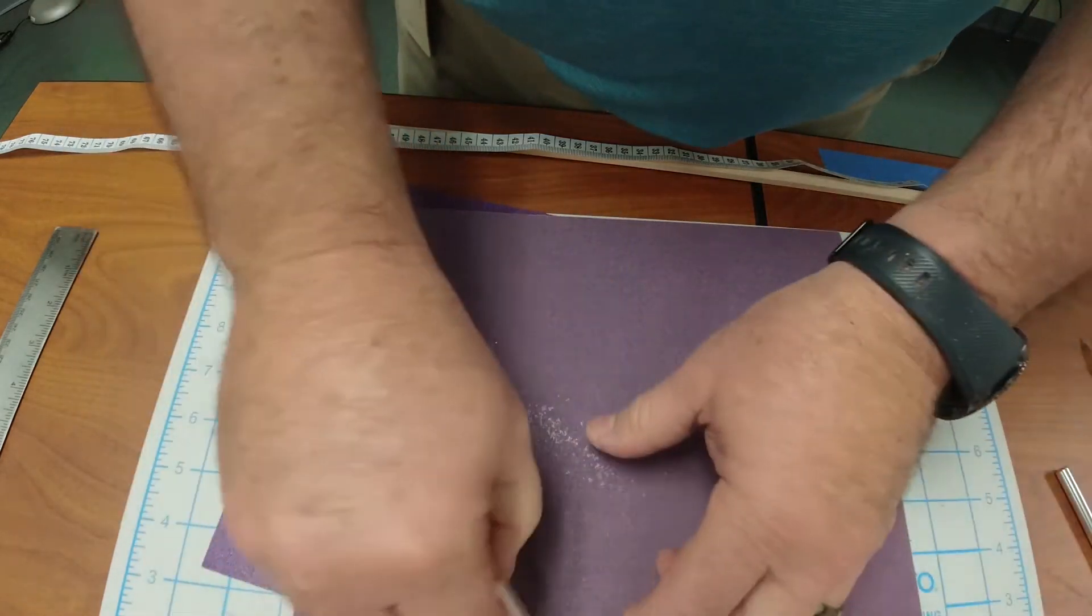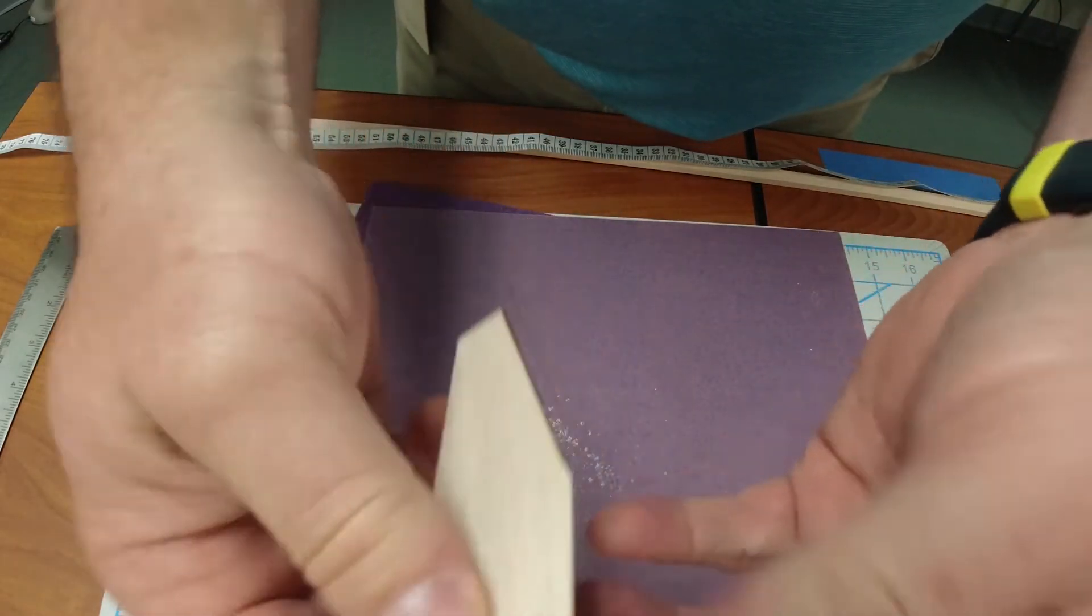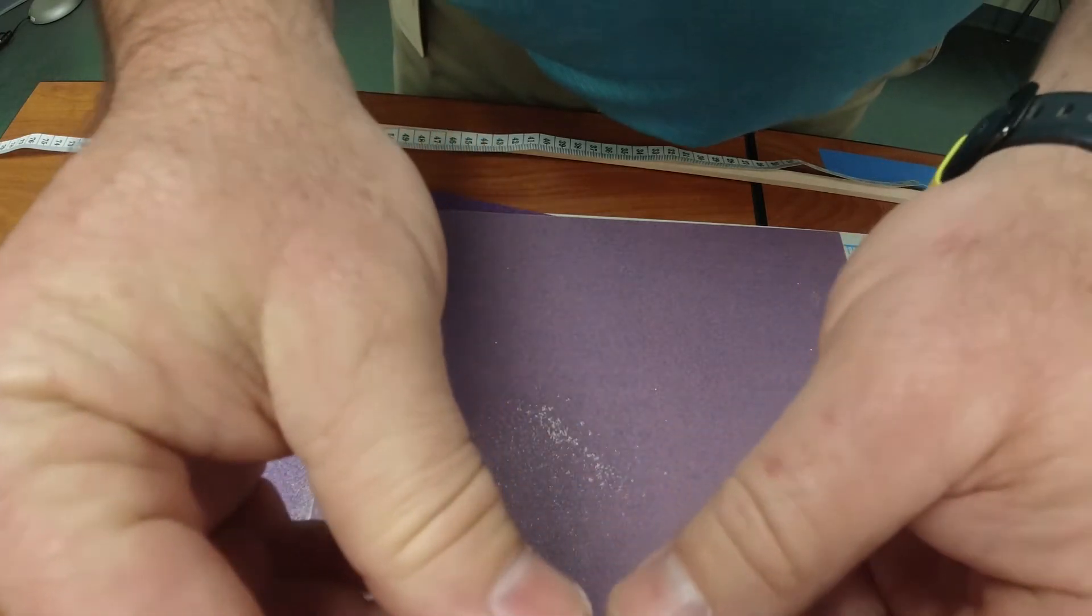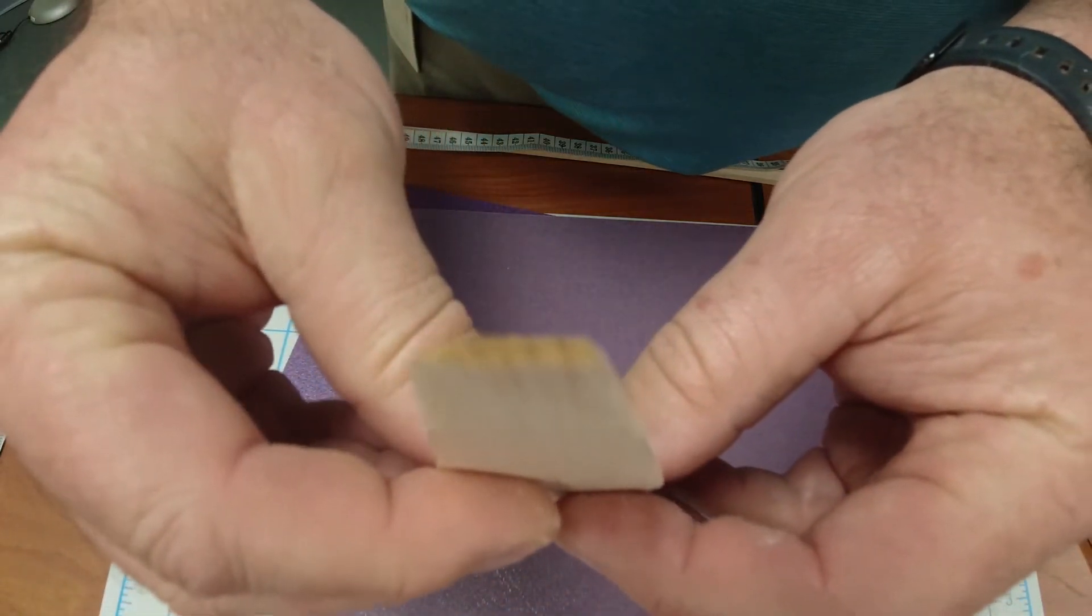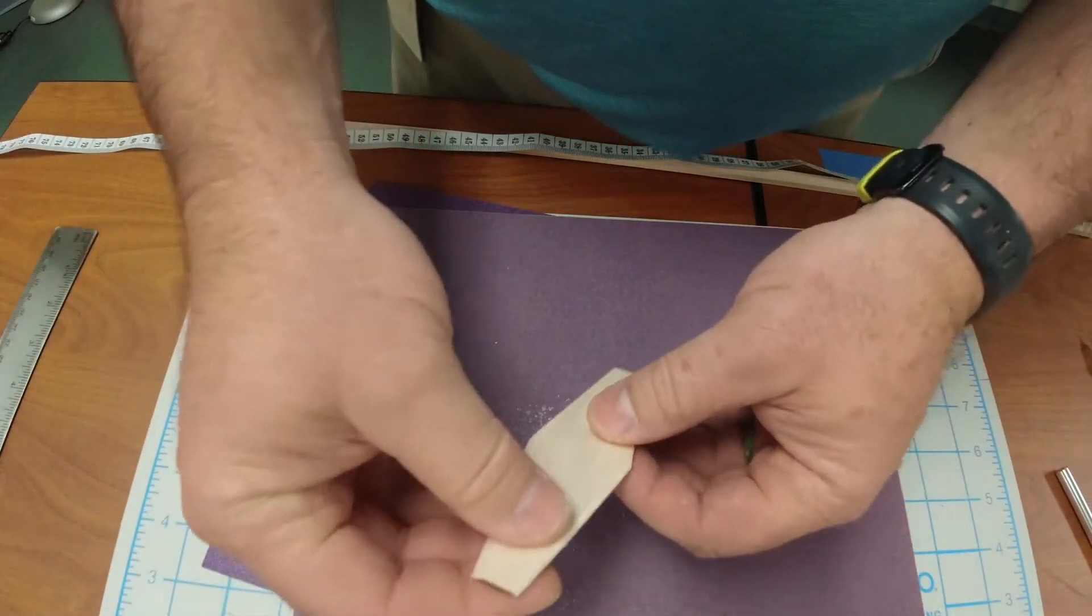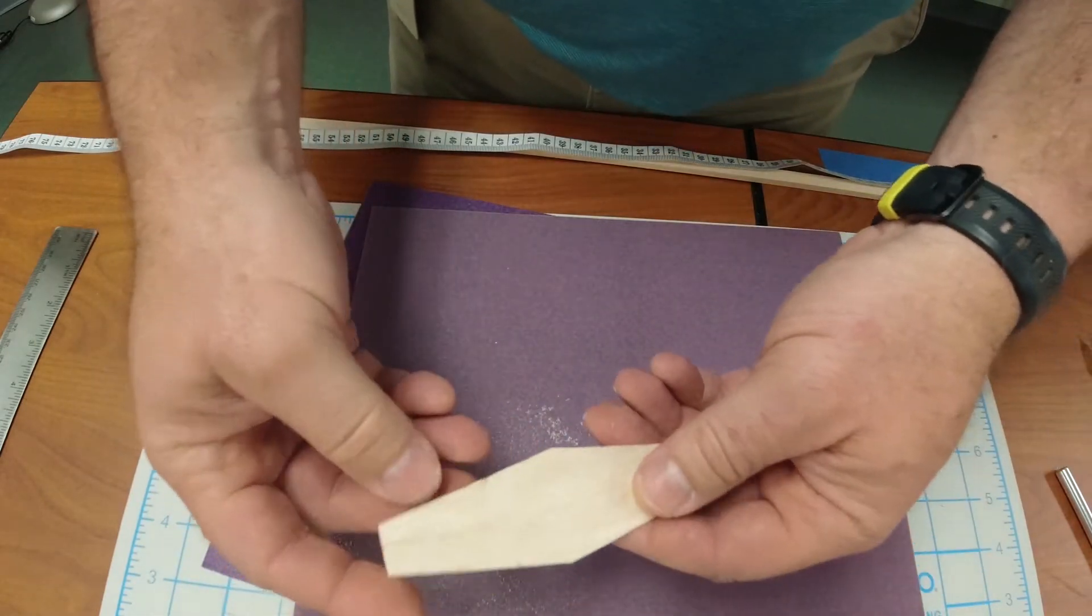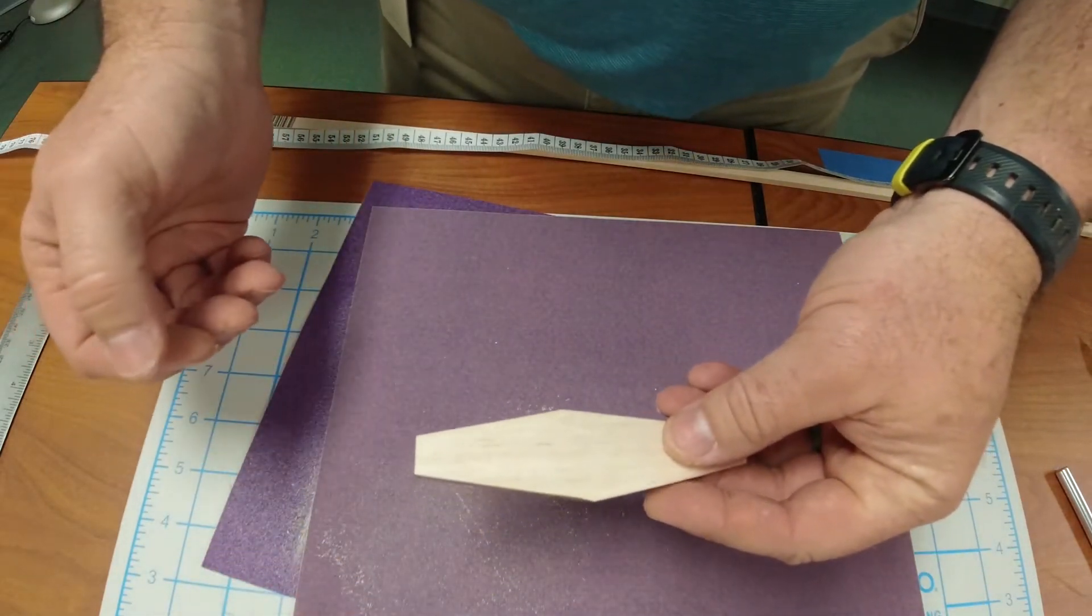Now you have more of a nice smooth round edge and more of an airfoil shape. Hopefully you can see that. You can do that on the ends, and you want to do that to every edge that you have.